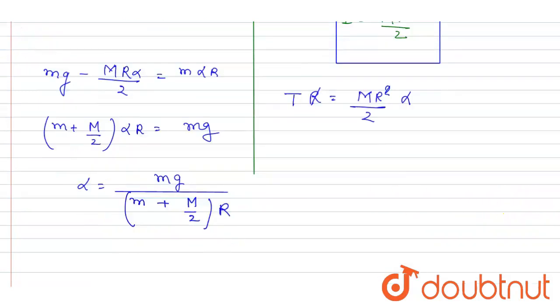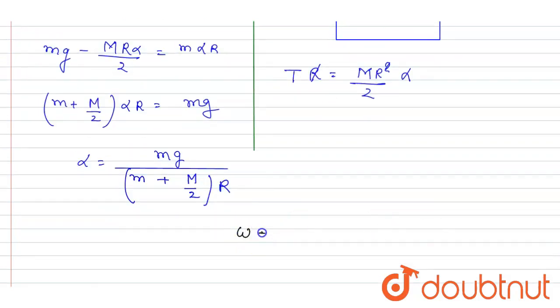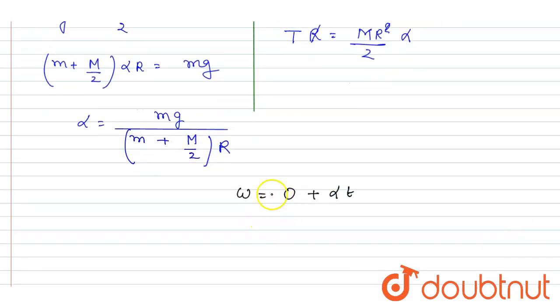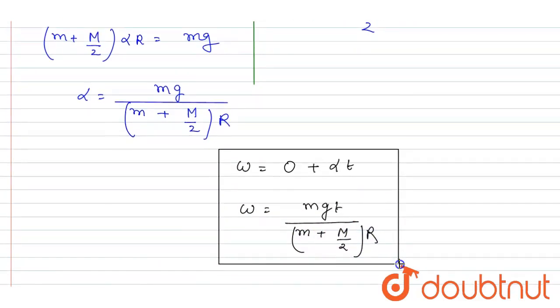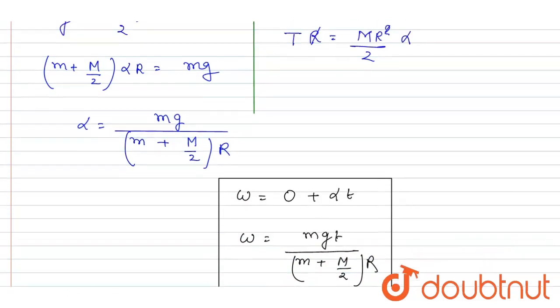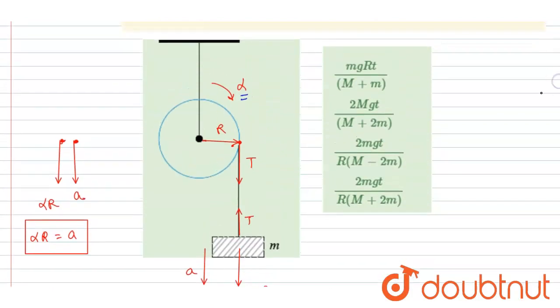Now, we can write down the omega at any instant. Initially, the system starts from rest. So I will write it as equals to this. Initial omega was 0. Put the value of alpha. So I will write MGT.